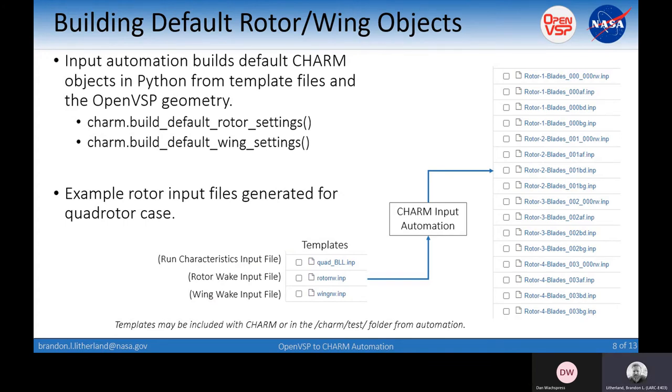When we're talking about building these default rotor wing objects in Python, the input automation builds these from template files. It has an idea of what information needs to be included, and then it modifies or adds to these files as needed. One example function is this build default rotor settings function. Another one for the wings is build default wing settings. The CHARM automation takes all that stuff and builds upon it.